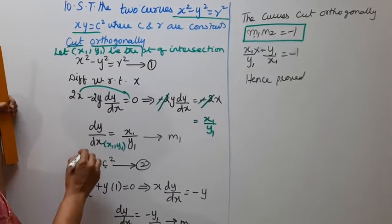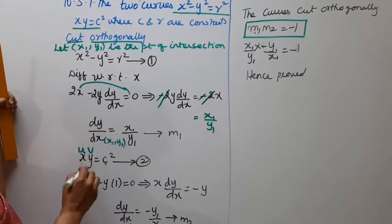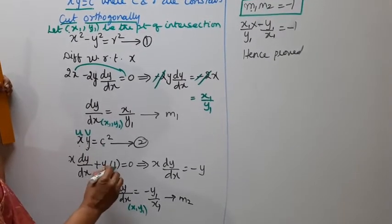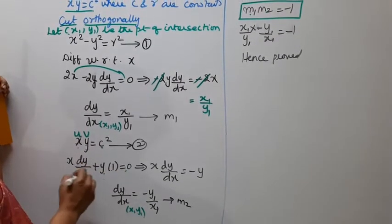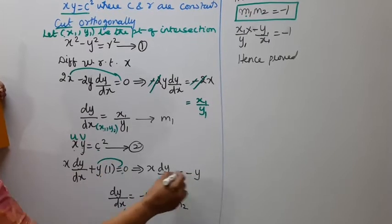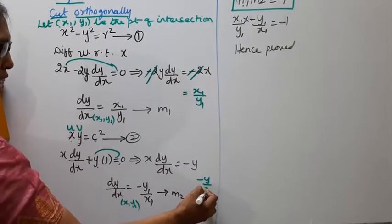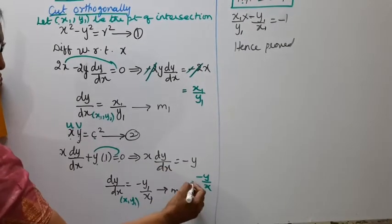This is the uv method. x as it is, y differentiate upon dy/dx. Plus y as it is, x differentiate upon dy/dx, equal to 0. So x dy/dx = -2x becomes dy/dx = -2x. dy/dx we get -y/x. At point (x₁, y₁) this is m₁. xy = c². x dy/dx + y = 0, so x dy/dx = -y. dy/dx = -y/x.